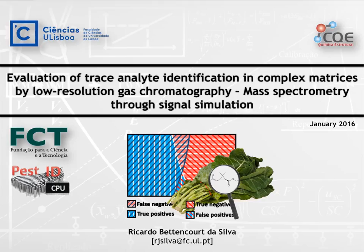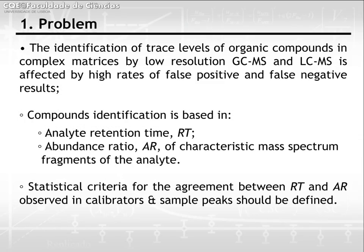I would like to present a paper published in Talenta in early 2016. The identification of trace levels of organic compounds in complex matrices by low-resolution GCMS and LCMS is frequently affected by high rates of false positive and false negative results. Compound identification based on these techniques relies on analyte retention time and abundance ratios of characteristic mass spectrum fragments. Statistically sound criteria for the agreement between retention times and abundance ratios observed in calibrators and sample peaks should be defined.